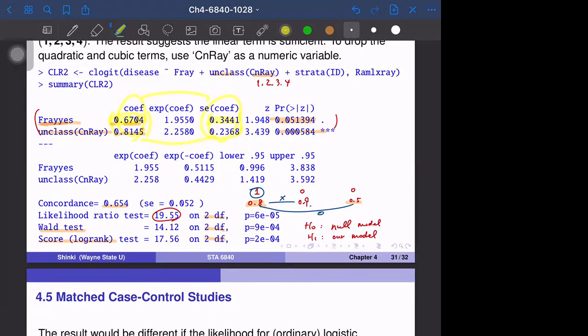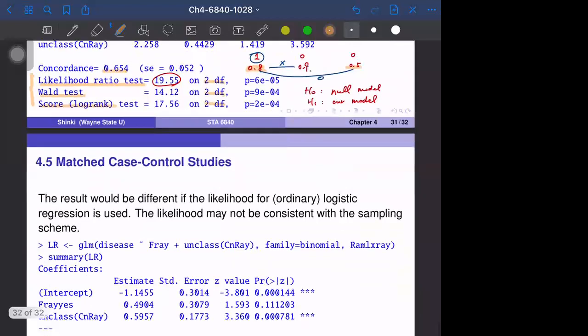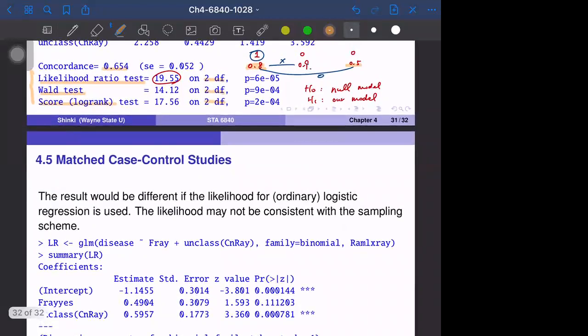The score test is also another version of the test by normal approximation. Usually, the likelihood ratio test has more information. Everything is approximation, so it's worthwhile to mention the multiple tests. Slightly different results, but basically we test the same thing.